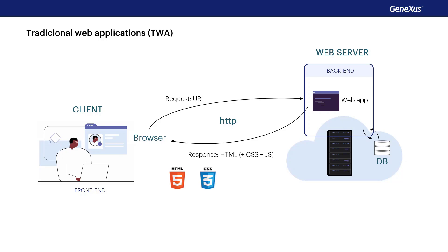To customize the look and feel of these elements, HTML allows including CSS code. CSS, currently in its CSS3 version, is a graphic design language used to define the style of HTML documents. These include font color and type, background color, margins, and so on. CSS has evolved in such a way that it allows including animations and other advanced effects in web pages.